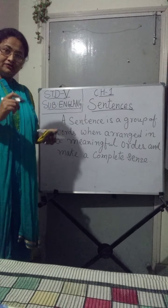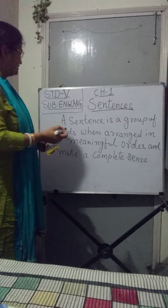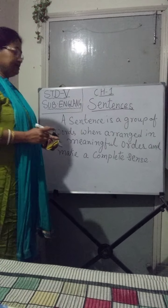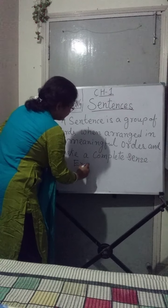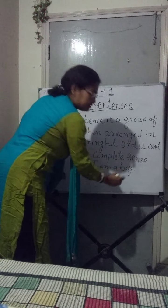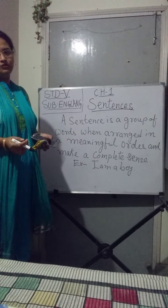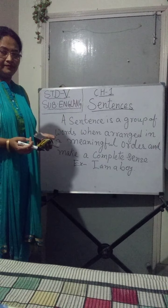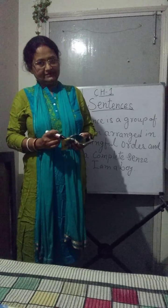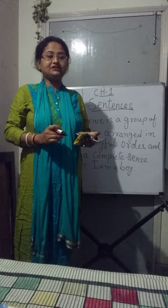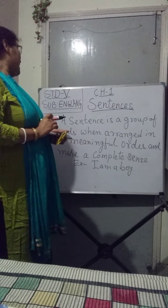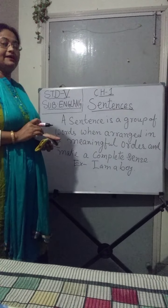Always write down at least two examples after writing a definition. Write down examples by yourself, or use the first examples I gave you at the beginning of class. For example: I am a boy. I read in class 5. I like chocolates. When I say I like chocolates, you are getting a complete sense — they are arranged in such an order that you get a complete sense. A sentence is a group of words when arranged in a meaningful order and make a complete sense.